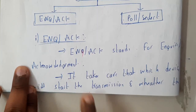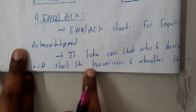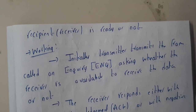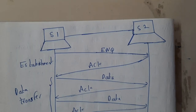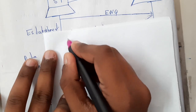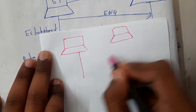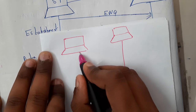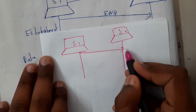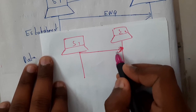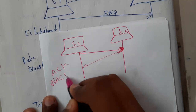ENQ/ACK stands for Enquire and Acknowledgement. It takes care of which device will start the transmission and whether the device is ready to accept or not. So if you understand the example clearly you can write the theory on your own. Initially, system one sends an enquiry to system two, asking: are you interested in collecting the data? There are two types of acknowledgement: ACK (acknowledgement) and NACK (non-acknowledgement). NACK means it is not interested; ACK means it is interested.